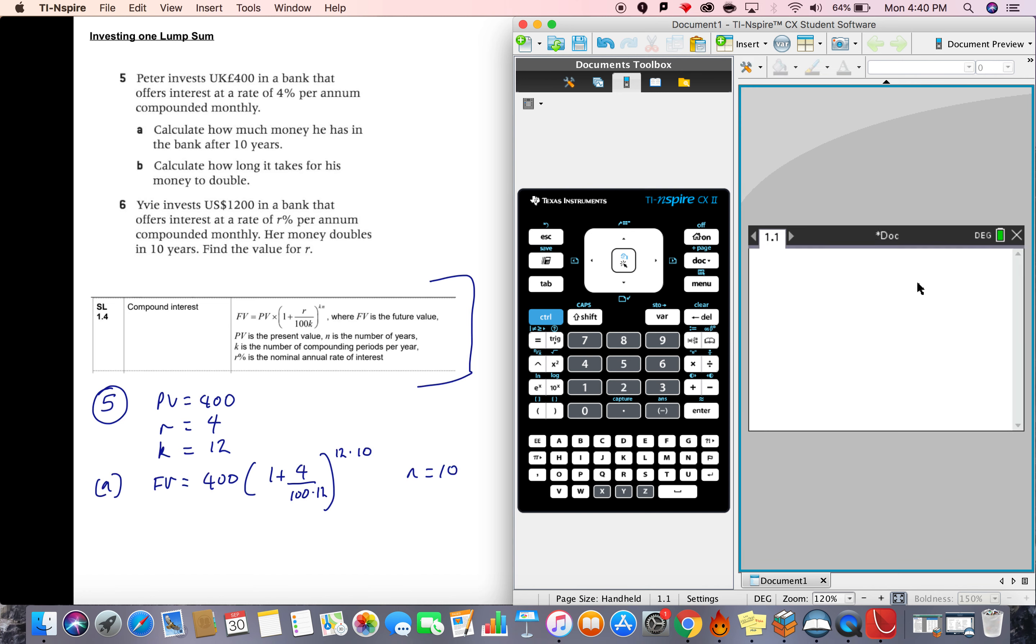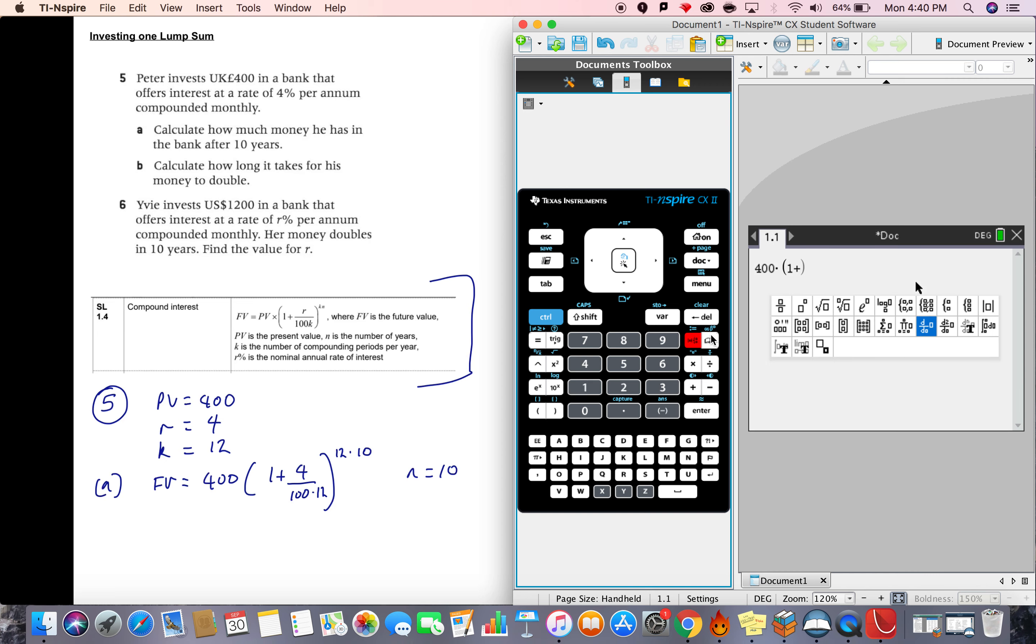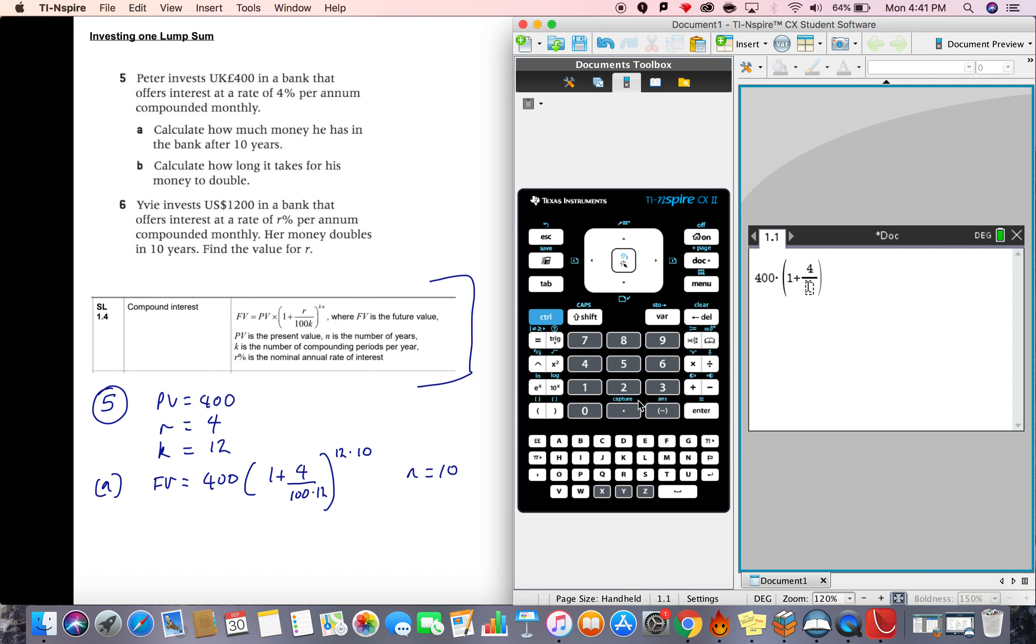And then just type in exactly what you see: 400 times by open bracket, 1 plus open fraction, 4 divided by 100 times 12, and then power it up to 12 times 10.